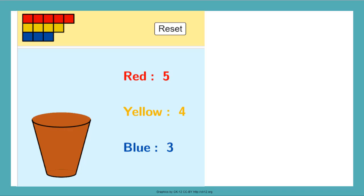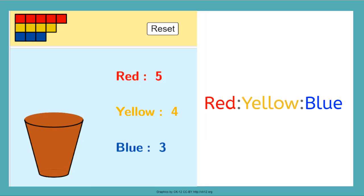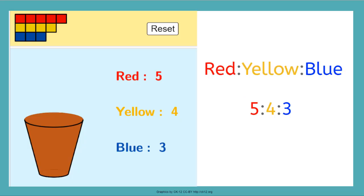Can you think of a way that we could compare all 3 colors at once? So instead of just comparing red to yellow or blue to yellow, we can compare red to yellow to blue. We can write the amount of each color we used as a ratio: 5 to 4 to 3.